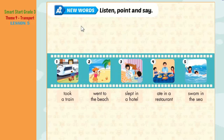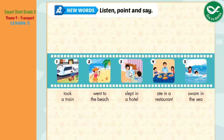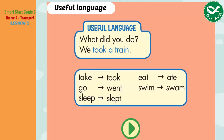New words. Listen, point, and say. 1. Took a train. 2. Went to the beach. 3. Slept in a hotel. 4. Ate in a restaurant. 5. Swam in the sea. Useful language: What did you do? We took a train. What did you do? We took a train.